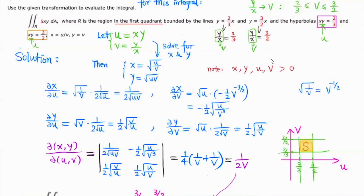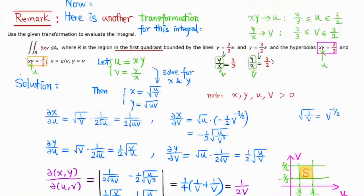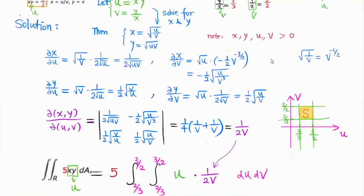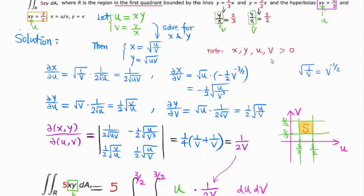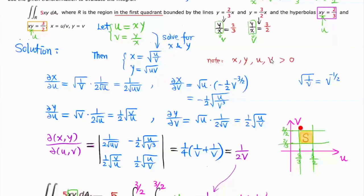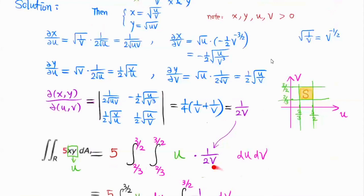Similarly, looking at the other equations, they have a pattern with X times Y on one side and a constant on the other. So we let U equal X times Y. That way U is going to be between 2/3 and 3/2 as well, because boundary maps to boundary. So the corresponding boundary on the U plane will be U equal to 2/3 and U equal to 3/2. The original region maps to this rectangle — in fact it's actually a square — which makes our integral easier to compute using the Jacobian.